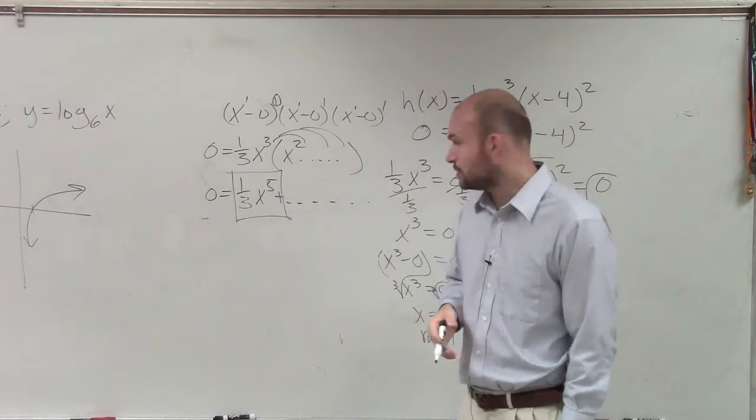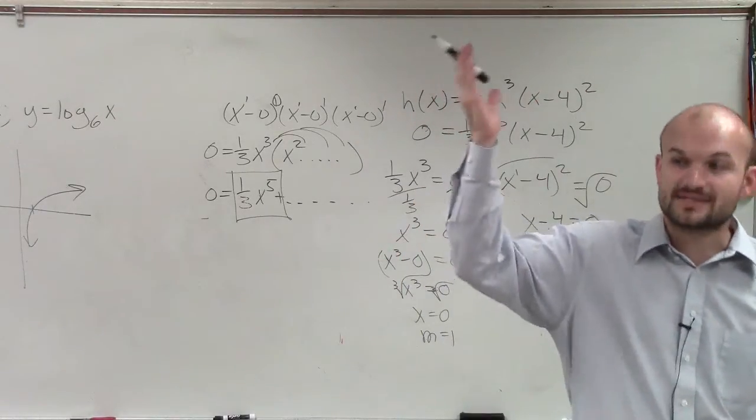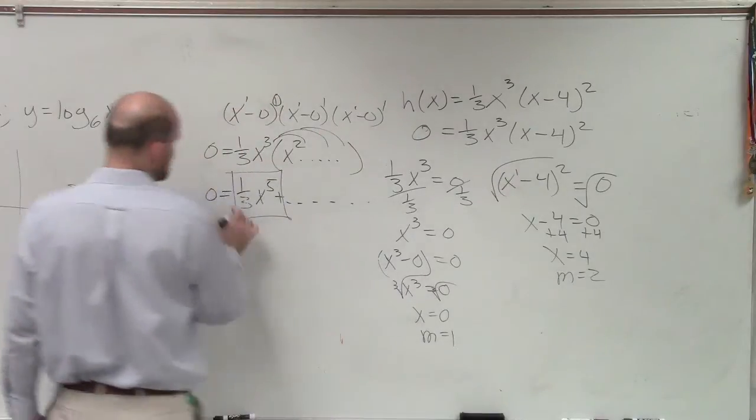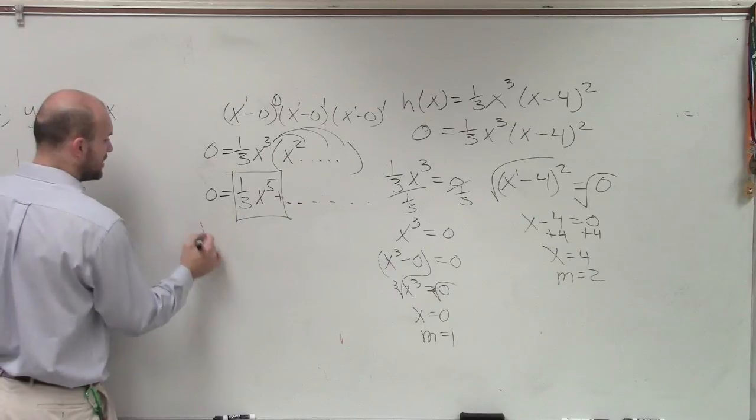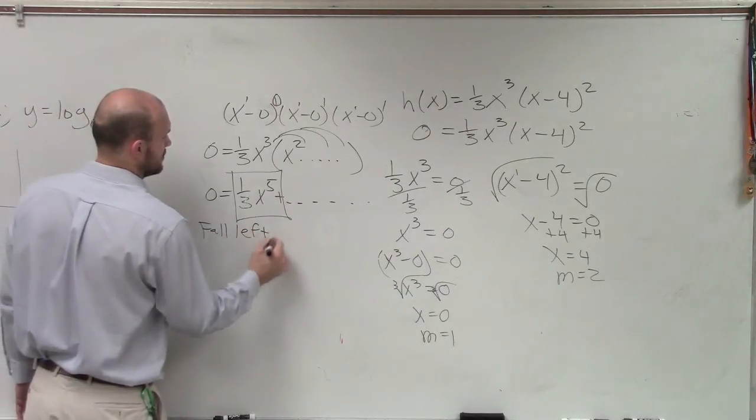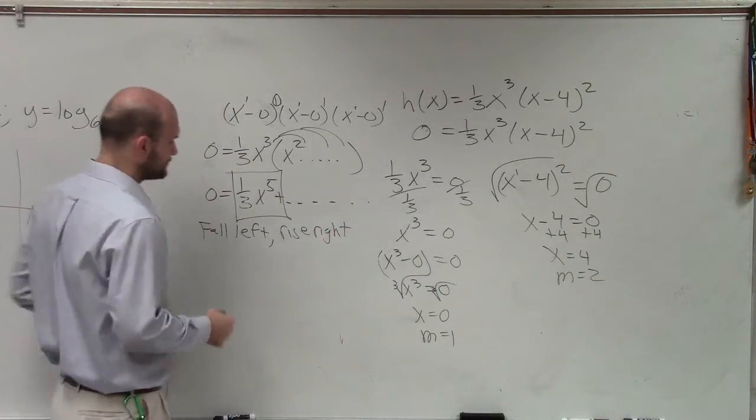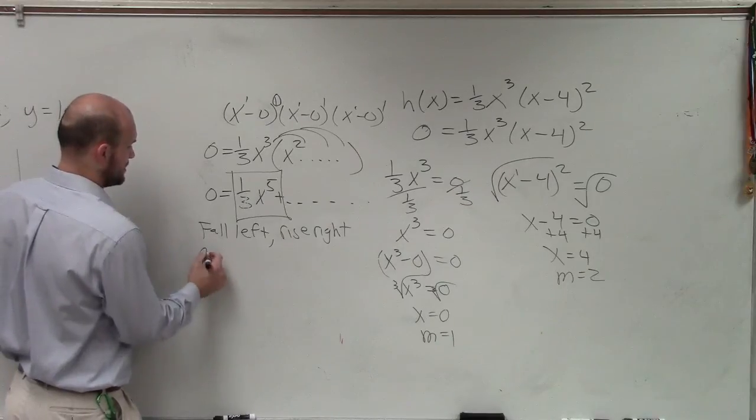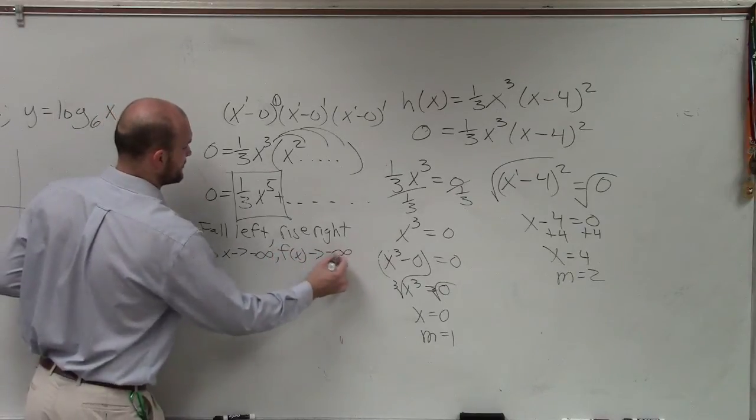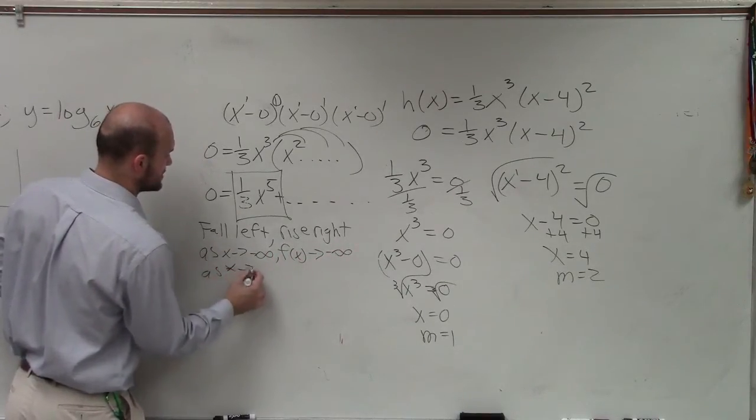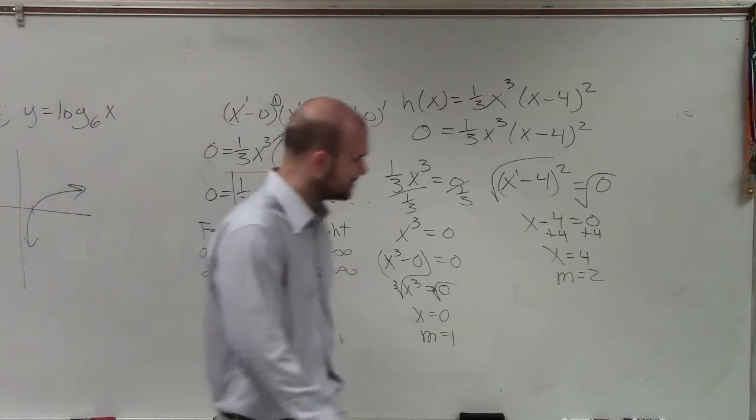So I now go and look at my leading coefficient test. I have x to the fifth. That means it's odd. That means the graph either falls left, rises right, or rises left, falls right. This sense my 1/3 is positive. I know my graph is going to fall left, rise right. If you guys want to know, again, that is as x approaches negative infinity, f of x approaches negative infinity. And as x approaches infinity, f of x approaches infinity. Just in case you guys want the formal definition of that.